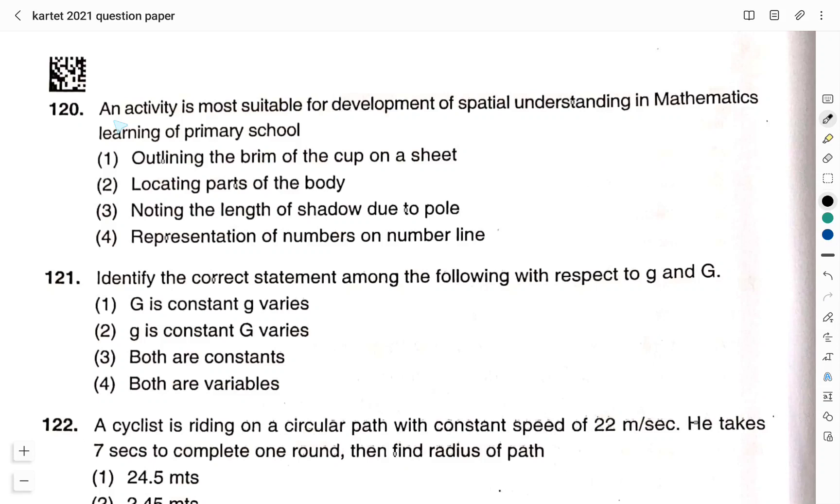Question number 120. An activity is most suitable for development of spatial understanding in mathematics learning of primary school, option 1: outlining the brim of the cup on a sheet, option 2: locating parts of the body, option 3: noting the length of shadow due to pole, option 4: representation of numbers on the number line. The question is asked related to the development of spatial understanding and therefore the right answer here is option 1: outlining the brim of the cup on a sheet.